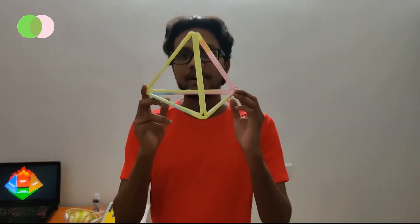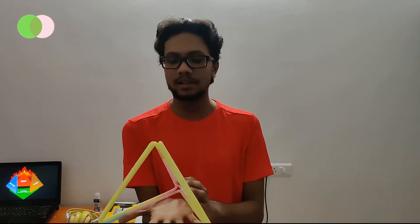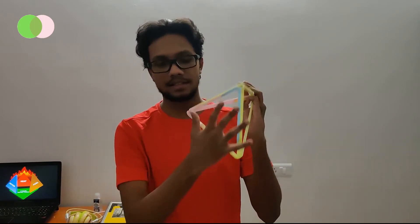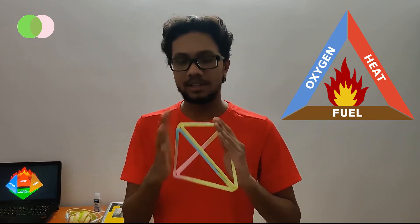That's why we represent the fire tetrahedron — basically this is four phases. This is like a pyramid structure. So in the fire triangle we have three components: oxygen, fuel, and heat — three phases already. And the fourth phase is the uninhibited chemical chain reaction.